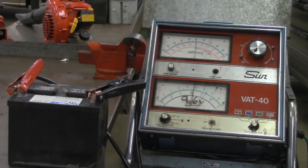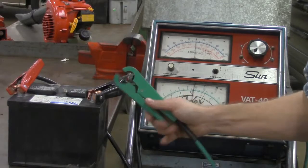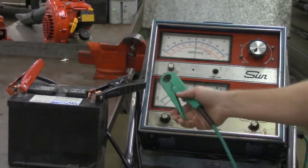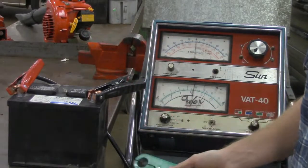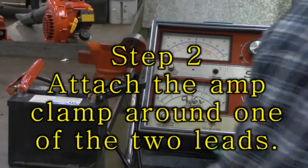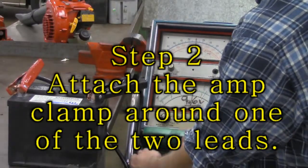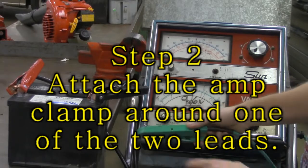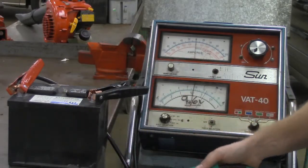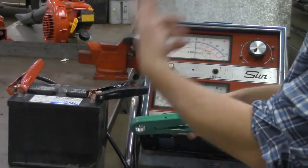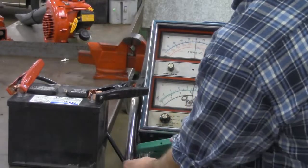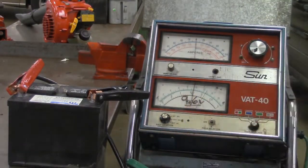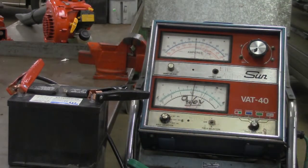So now we're going to take our amp clamp. My amp clamp right here is going to go right around either one. We can use the positive or we can use the negative. So since I got the negative wire right here, I'm just going to go ahead and use that one. I'm going to take the arrow. If I'm using the negative wire, I'm going to use the arrow pointing away from the battery. If I use the positive, the arrow would point towards the battery. So arrow pointing away, it's on the negative side.